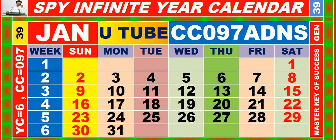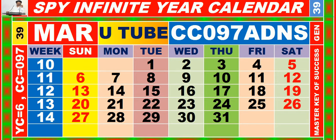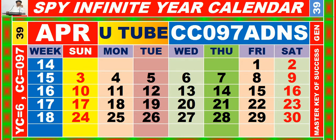Calendar for the month of January having calendar code equal to 097. Calendar for the month of February having calendar code equal to 097. Calendar for the month of March having calendar code equal to 097. Calendar for the month of April having calendar code equal to 097.